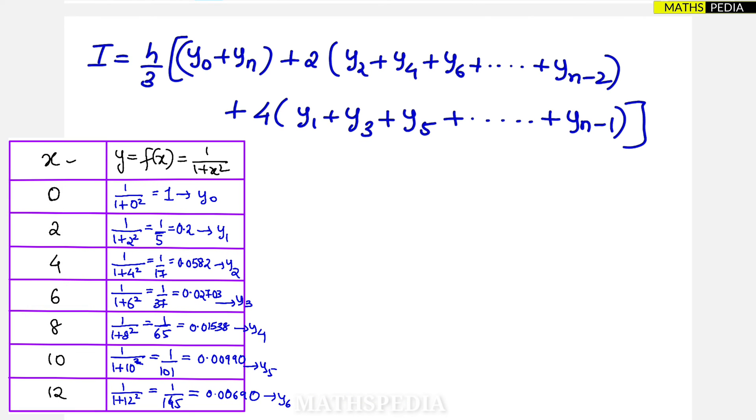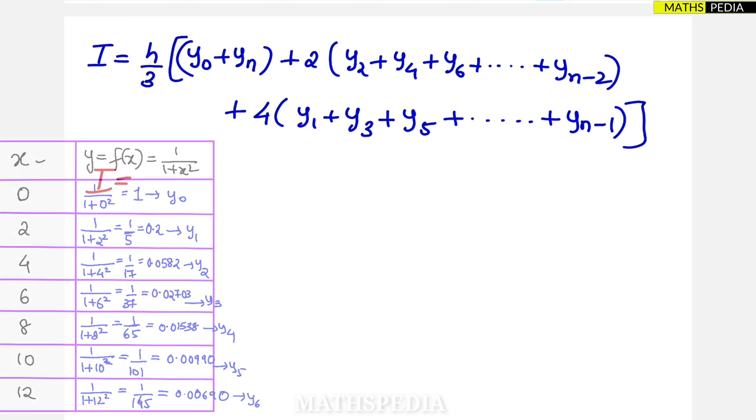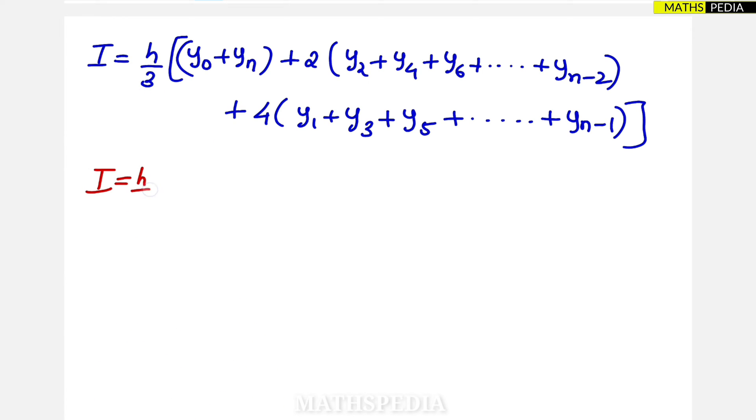Now we have to substitute these values in the equation, so we have to put it in the formula. So I is equal to h by 3 bracket, so first term is nothing but always it is y naught plus the last term we have calculated in the table, you can observe which is nothing but y6.